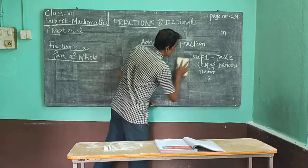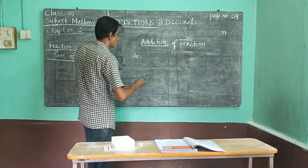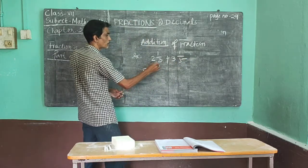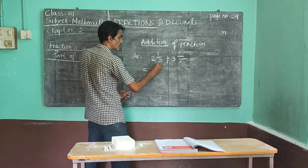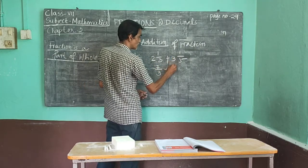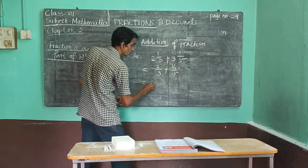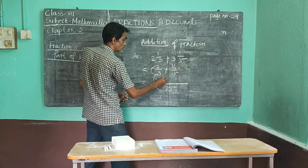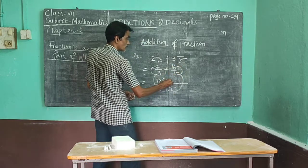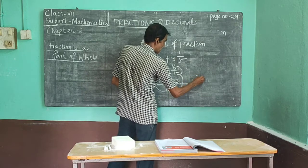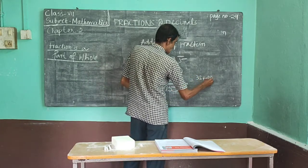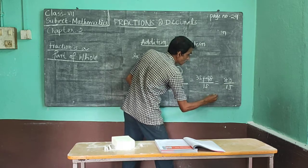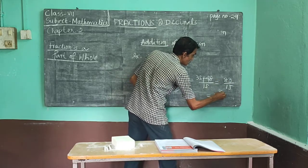Another example of addition with mixed fractions: two and one upon three added by three and one by five. First convert to improper fractions — three times two plus one gives seven upon three, and five times three plus one gives sixteen upon five. Now take the LCM of three and five, which is fifteen. Divide and multiply: seven into five gives thirty-five, and sixteen into three gives forty-eight. So thirty-five plus forty-eight by fifteen equals eighty-three by fifteen. Converting to a mixed number gives five and eight by fifteen. This is your answer.